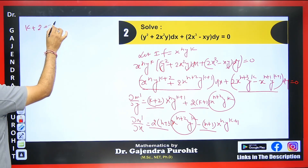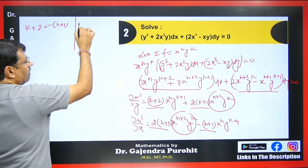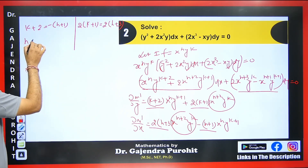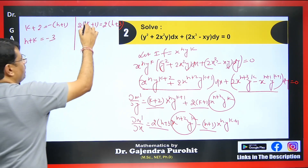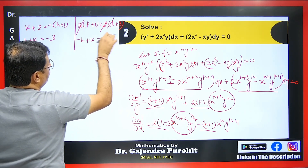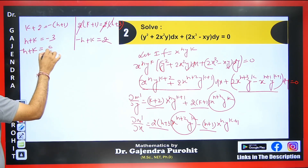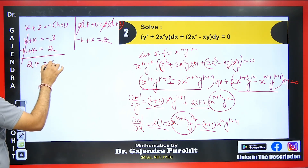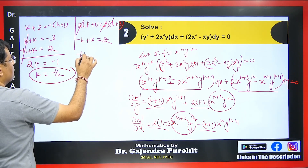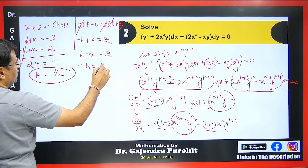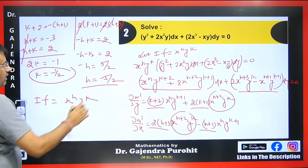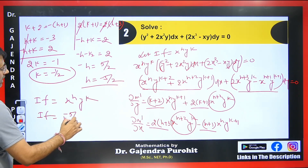Equating coefficients gives us: k + 2 = −(h + 1), which yields h + k = −3, and 2(k + 1) = 2(h + 3), which simplifies to −h + k = 2. Adding these two equations: 2k = −1, so k = −1/2. Substituting back: −h − 1/2 = 2, giving −h = 5/2, so h = −5/2. Therefore the integrating factor for this equation is x^(−5/2) · y^(−1/2).